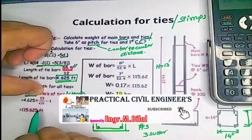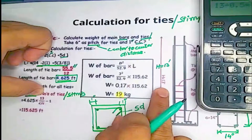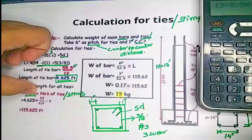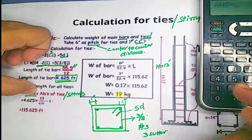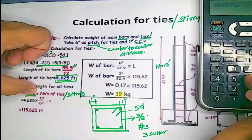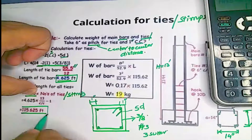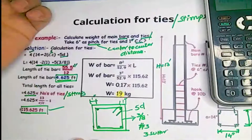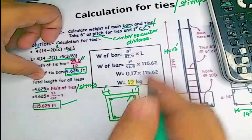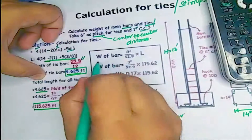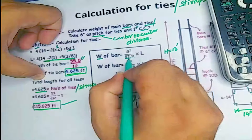So 26 stirrups will be used in the 13-foot height column. We deduct 1, giving 25 stirrups. Multiplying 25 by the unit length of one stirrup (4.625 feet) equals 115.625 feet total length of stirrups. Now we find the unit weight. The formula for weight of the bar is: W = diameter squared divided by 52.9, multiplied by total length.